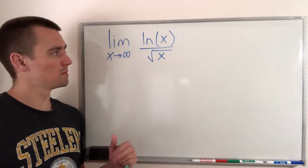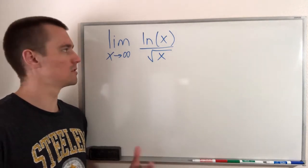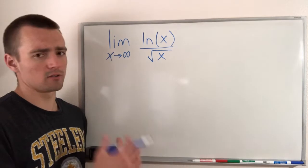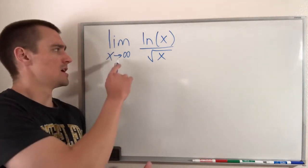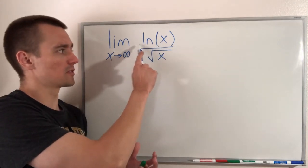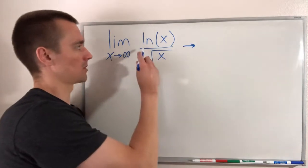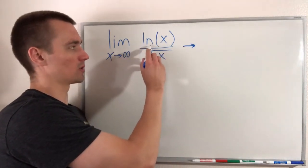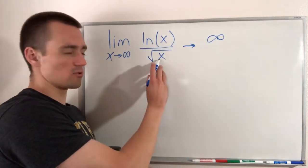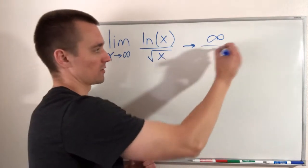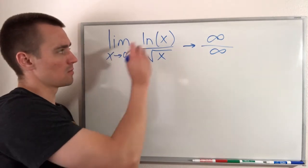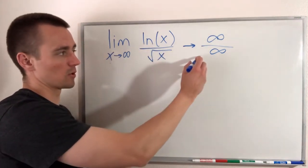So when you look at this problem, obviously the first thing that you'd notice is that we have a limit of a fraction here. When you think about the top and the bottom of this fraction, as x goes to infinity, you would notice that both the top and the bottom are going to go towards infinity. As x gets bigger and bigger, the natural log of a bigger number is going to get infinitely large. And also as we take the square root of an infinitely large number, we're still going to end up with an infinitely large number. So as x goes to infinity, both natural log of x and square root of x are both going to go to infinity.